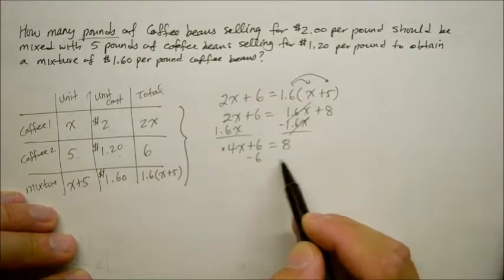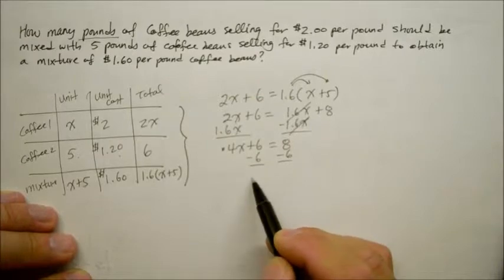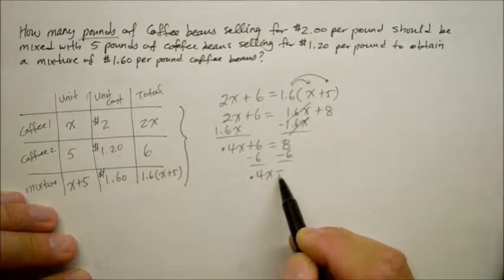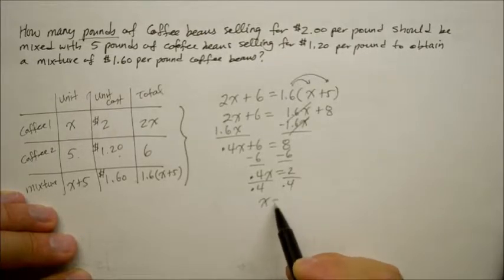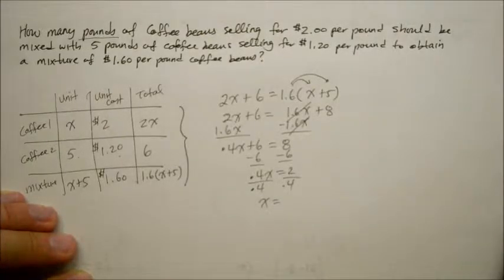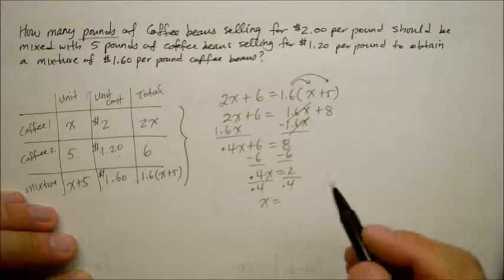Now to solve for X, we subtract the 6 from both sides of the equation. So we got 0.4X is equal to 2. And divide both sides by the coefficient 0.4. X becomes 2 divided by 0.4, that becomes 5.